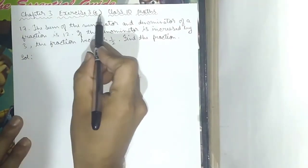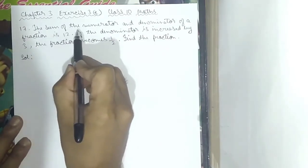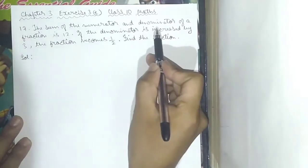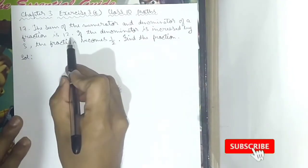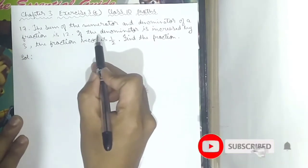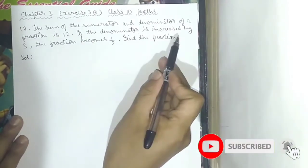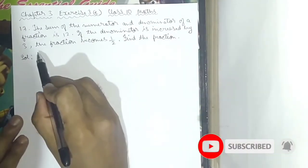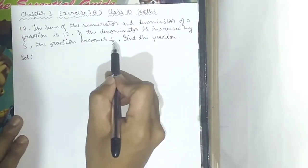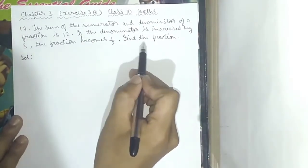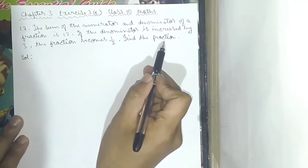Chapter 3, Exercise 3e, Class 10 Maths. Number 17: the sum of the numerator and denominator of a fraction is 12. If the denominator is increased by 3, the fraction becomes 1 by 2. Find the fraction.